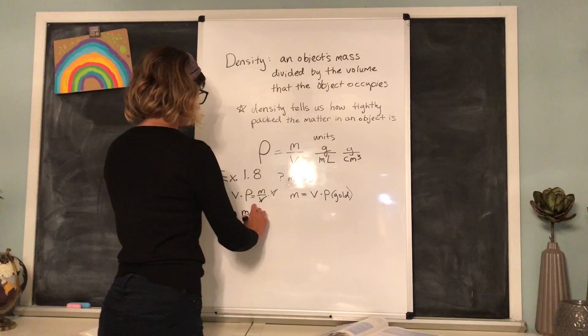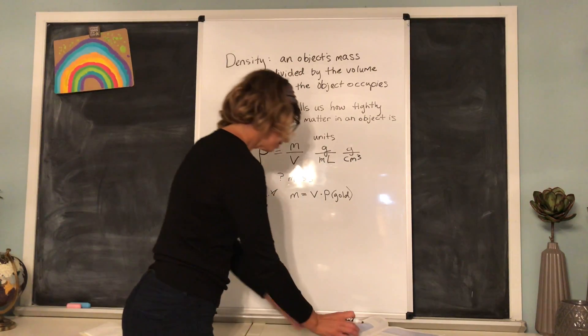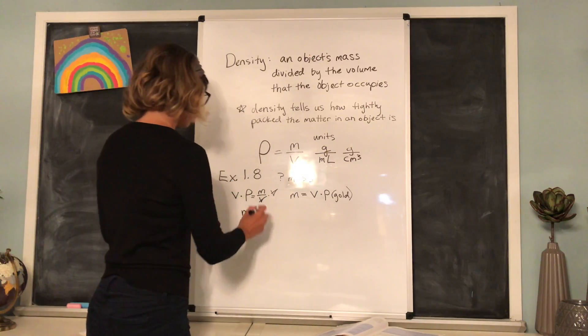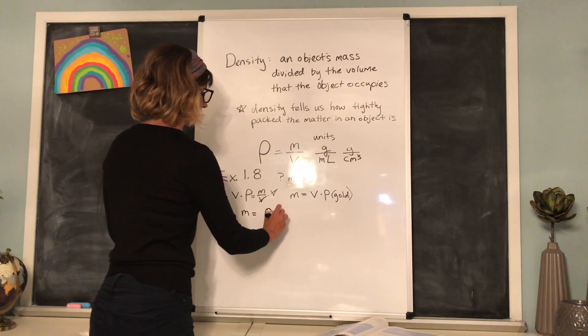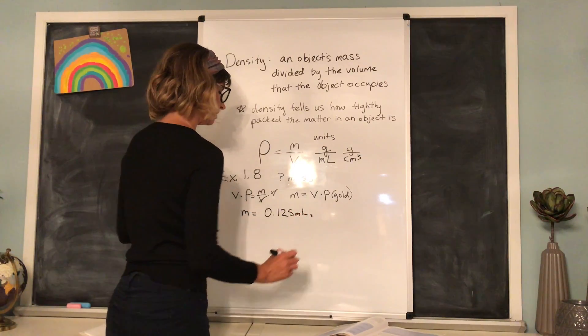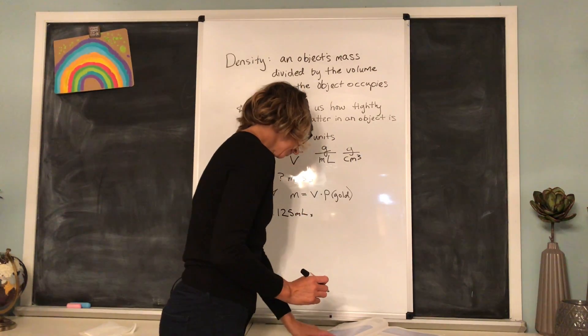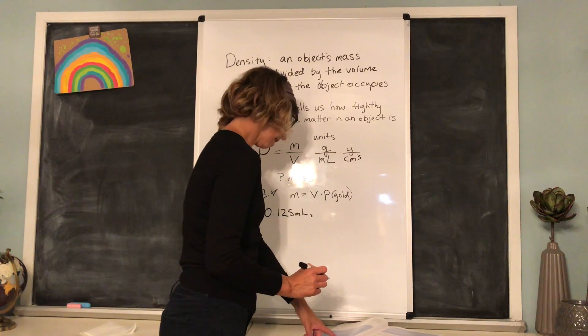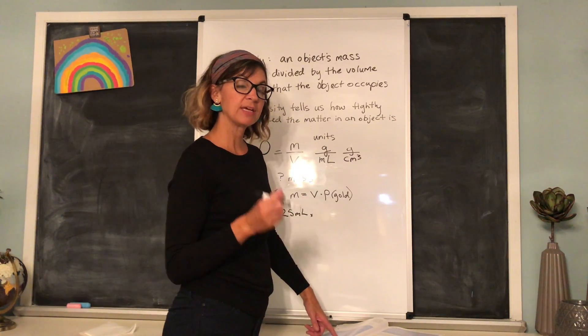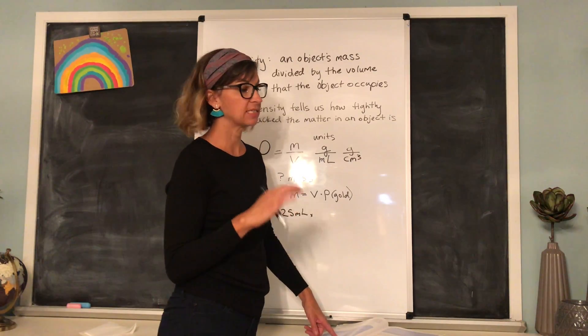Mass equals, what was the volume that he had? 0.125 milliliters. And we're going to multiply it times the volume. Excuse me, that was the volume. We're going to multiply it by the known density of gold because any sample of gold has the same density.